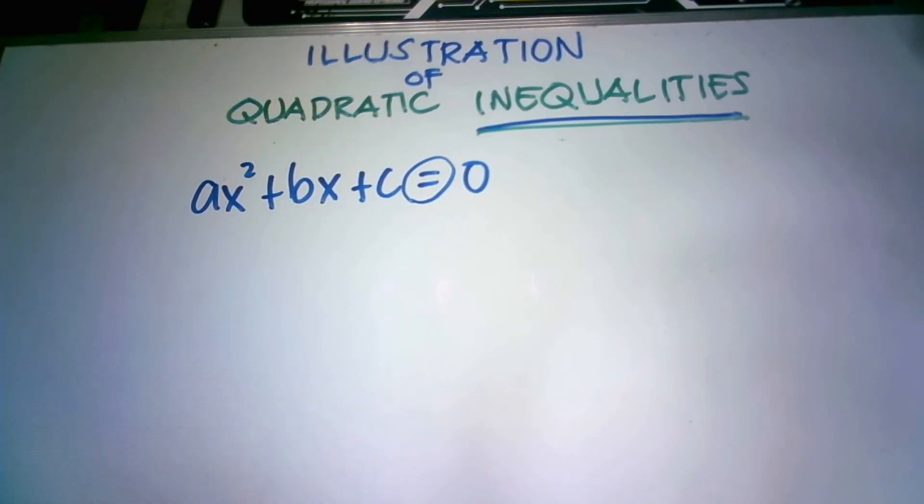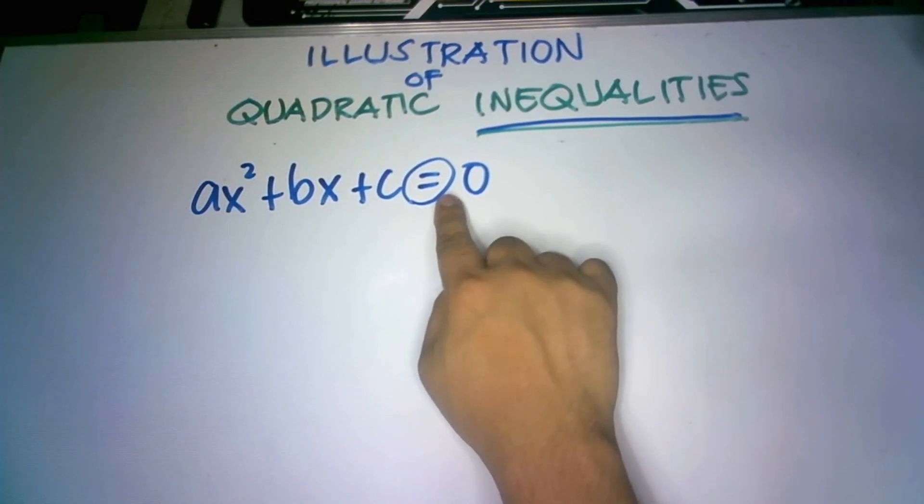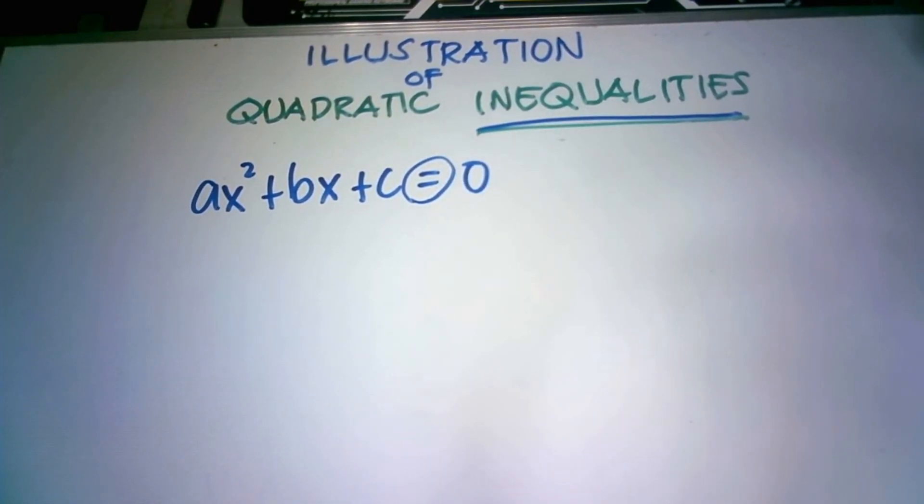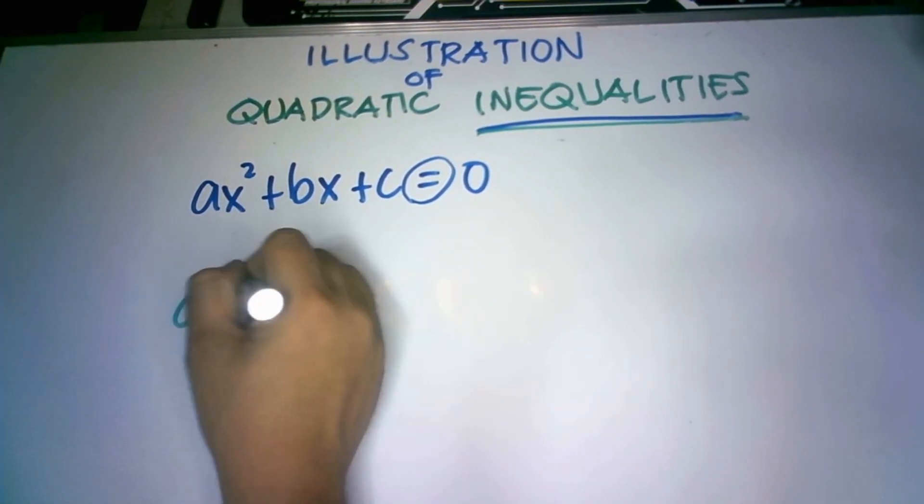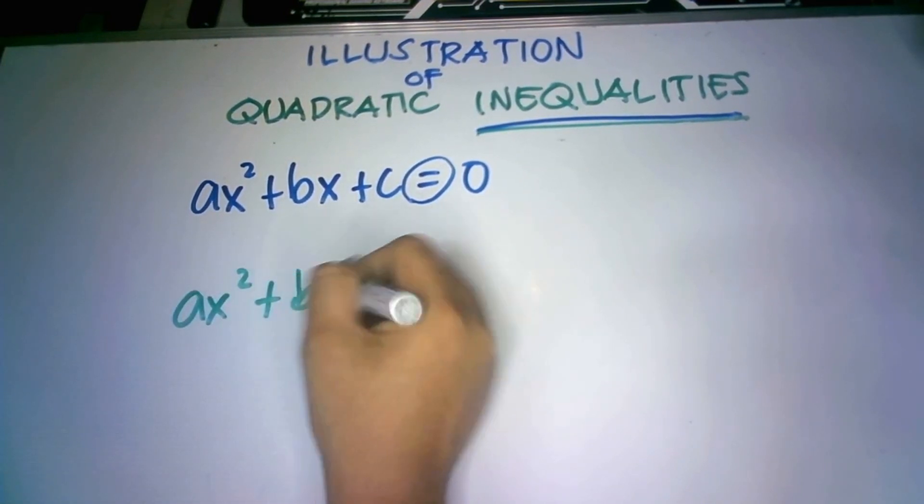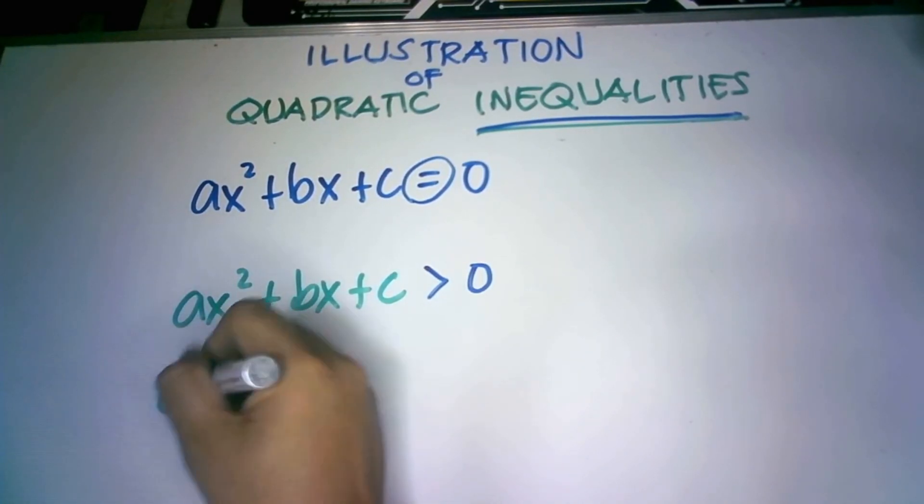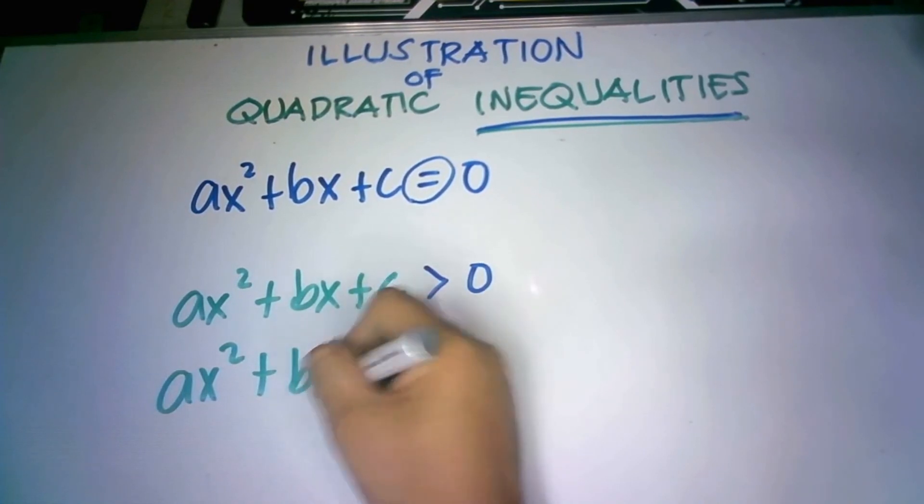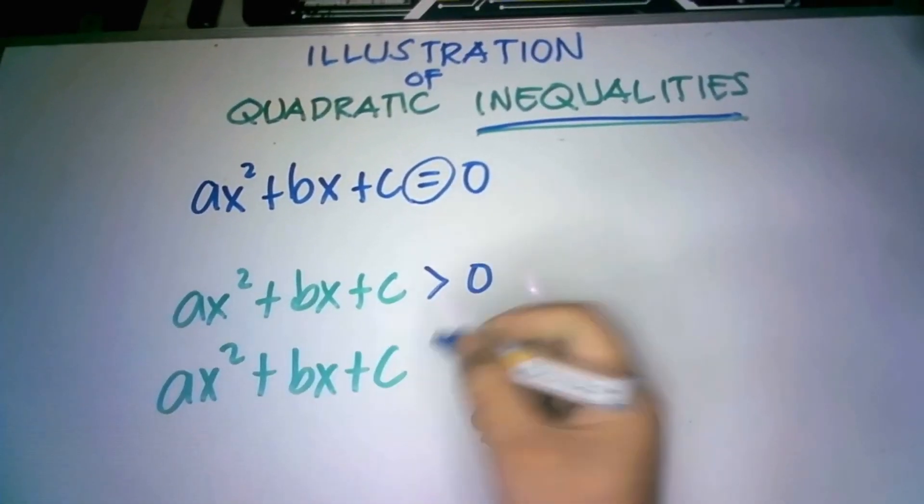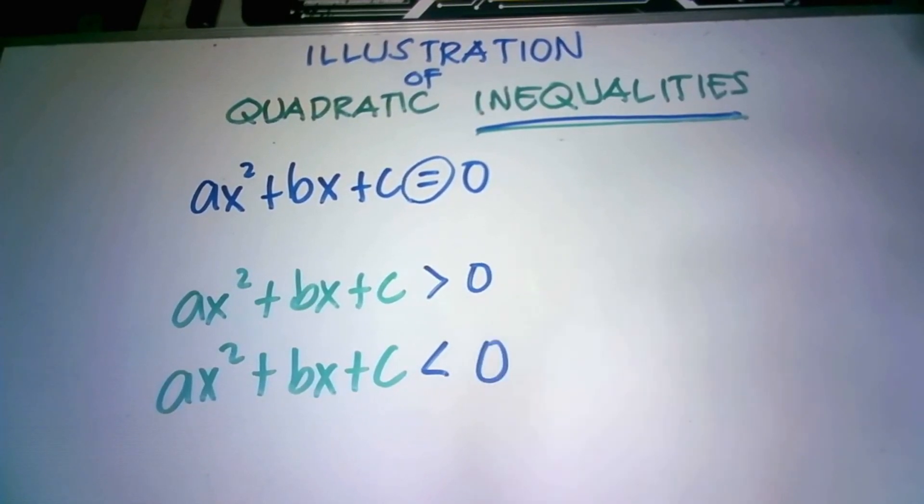Pag buhiyon magutag quadratic inequalities, actually, ang symbol na makita na ito, the right, is katong inequality symbol na itong ginapangita. Give you ganina. So, may tabo, ingani. Mahimu na siya, ax squared plus bx plus c pwede siya greater than zero. Or, ax squared plus bx plus c pwede siya magamit o symbol na less than zero, o, kita ninyo na.